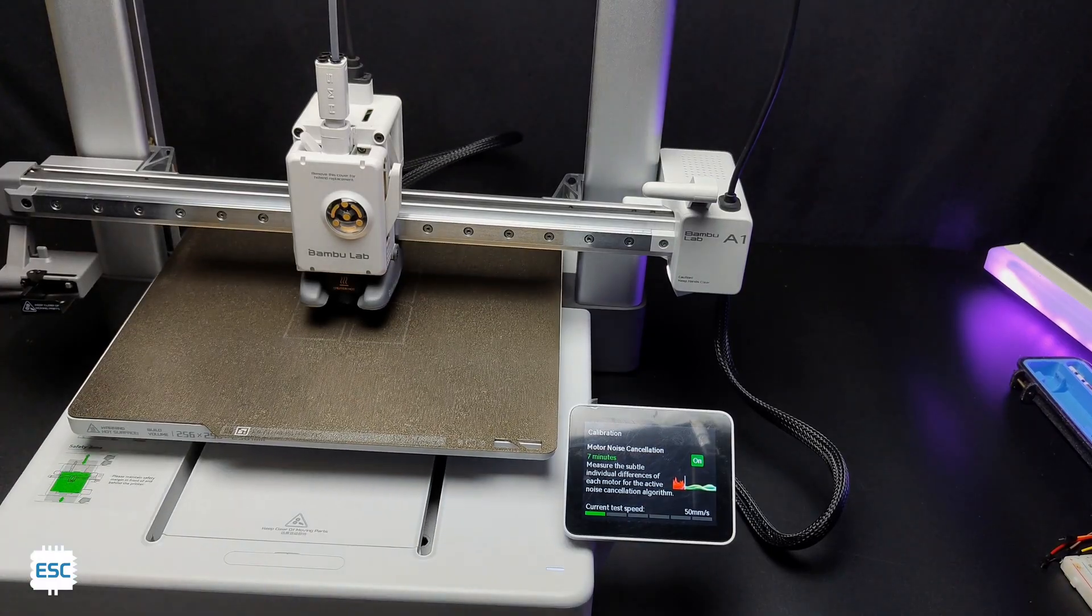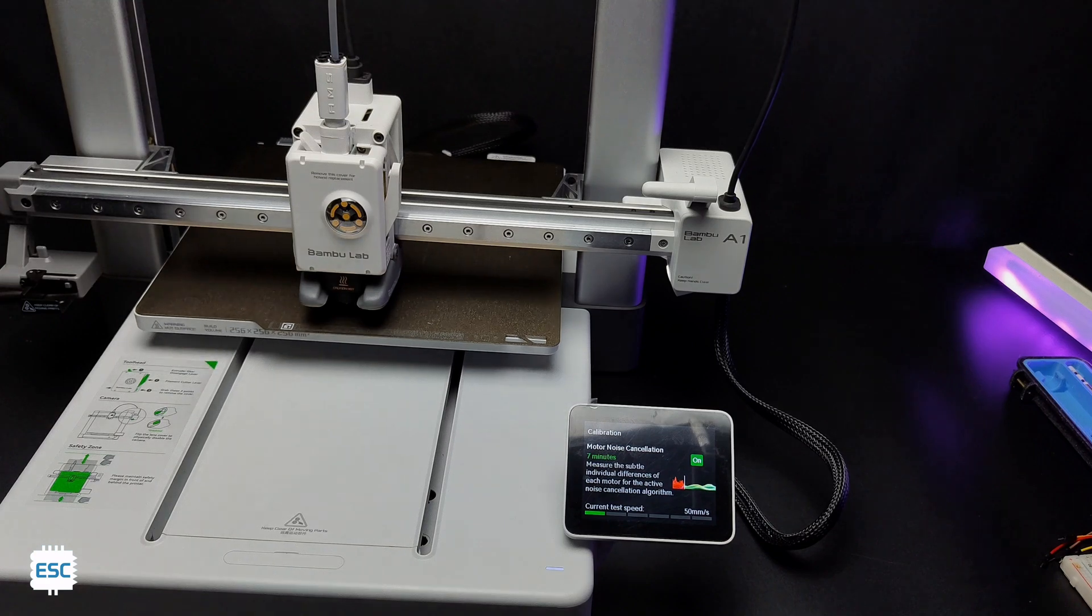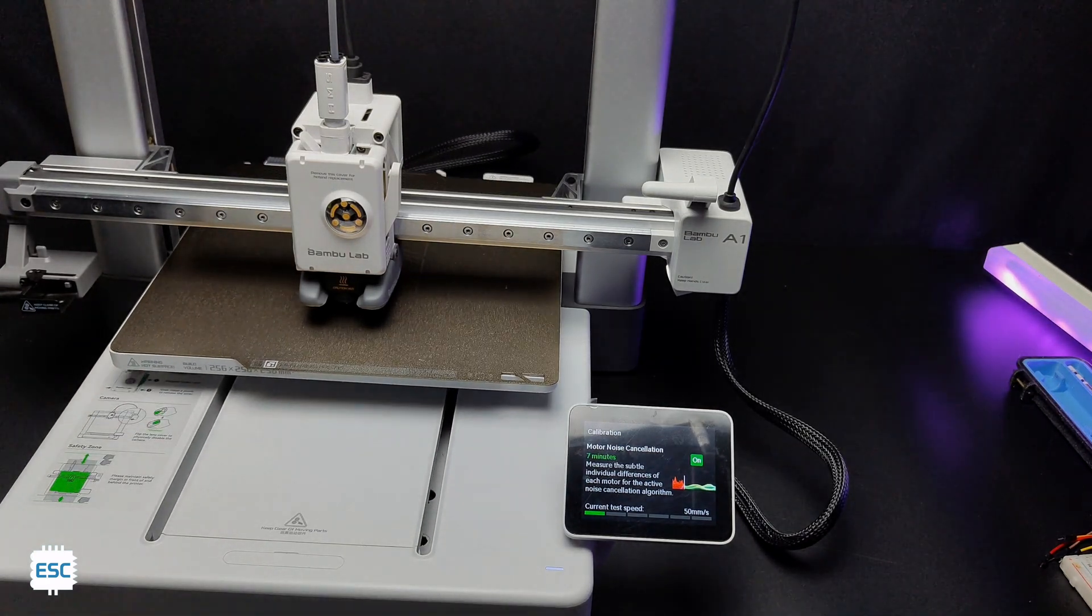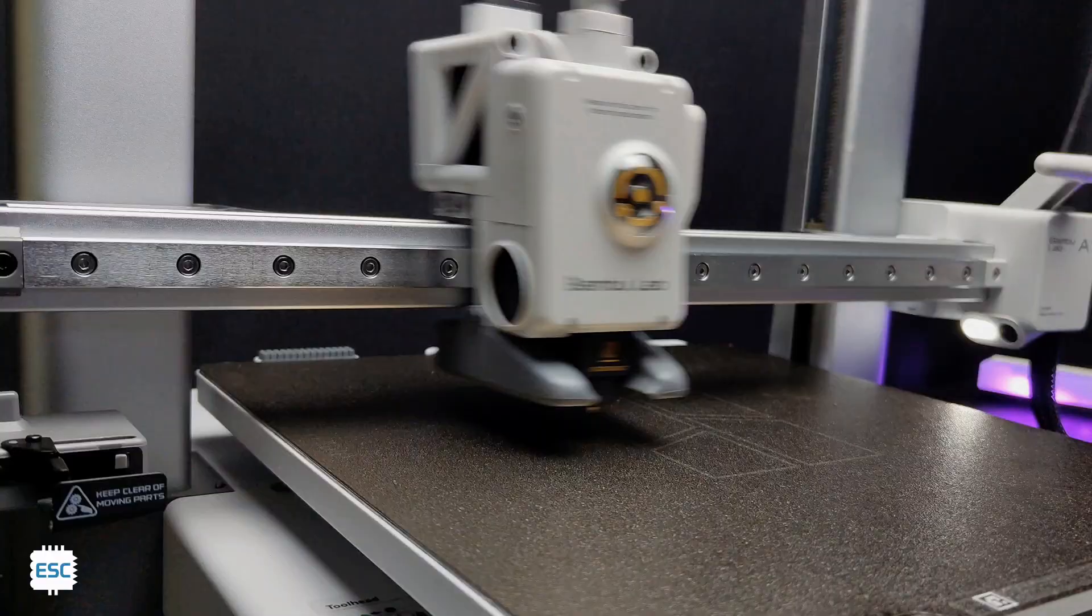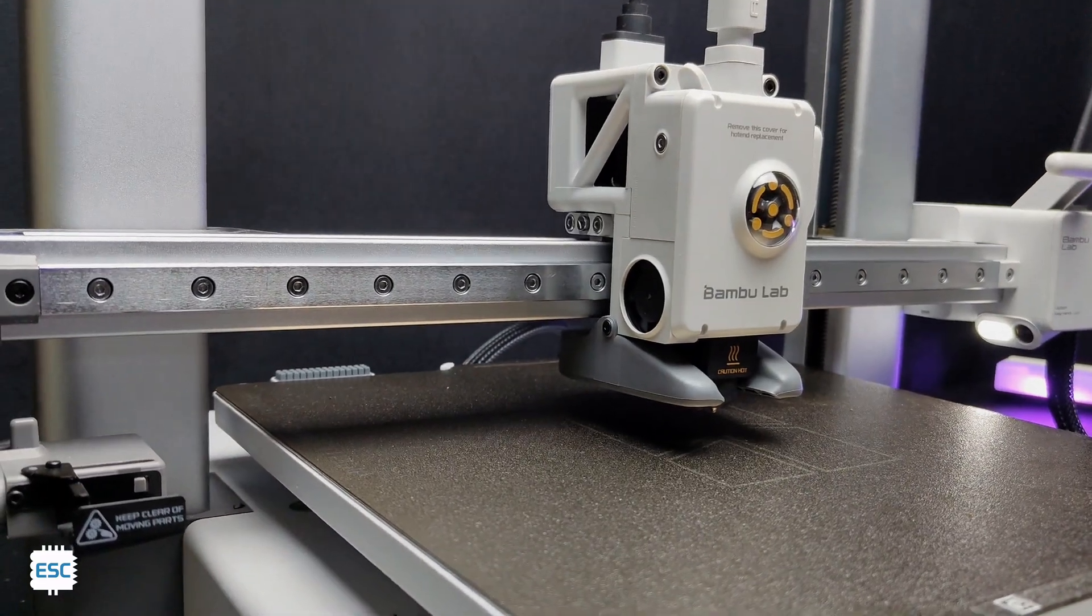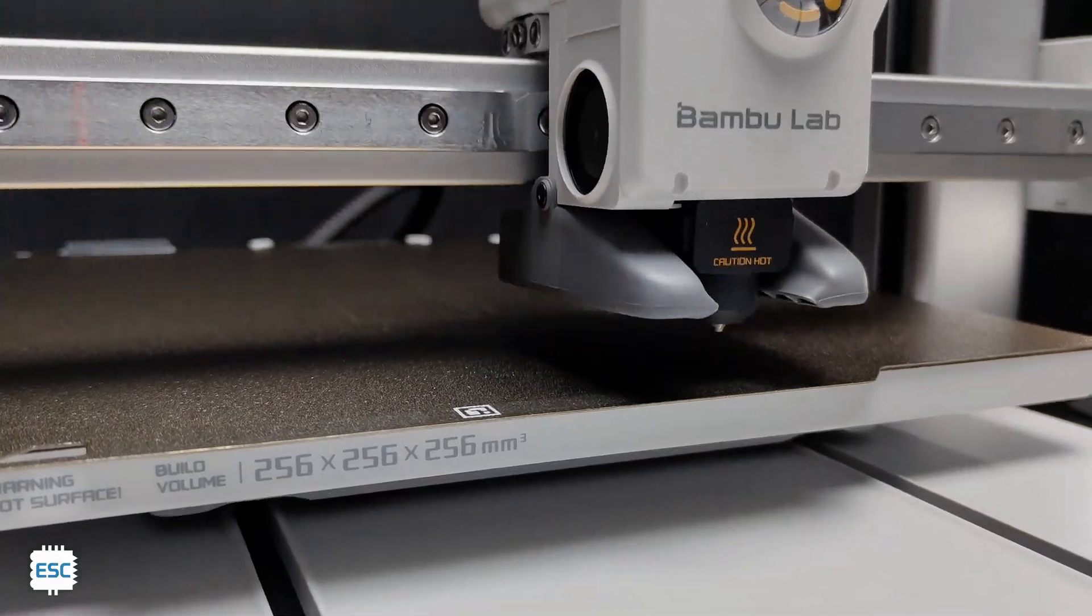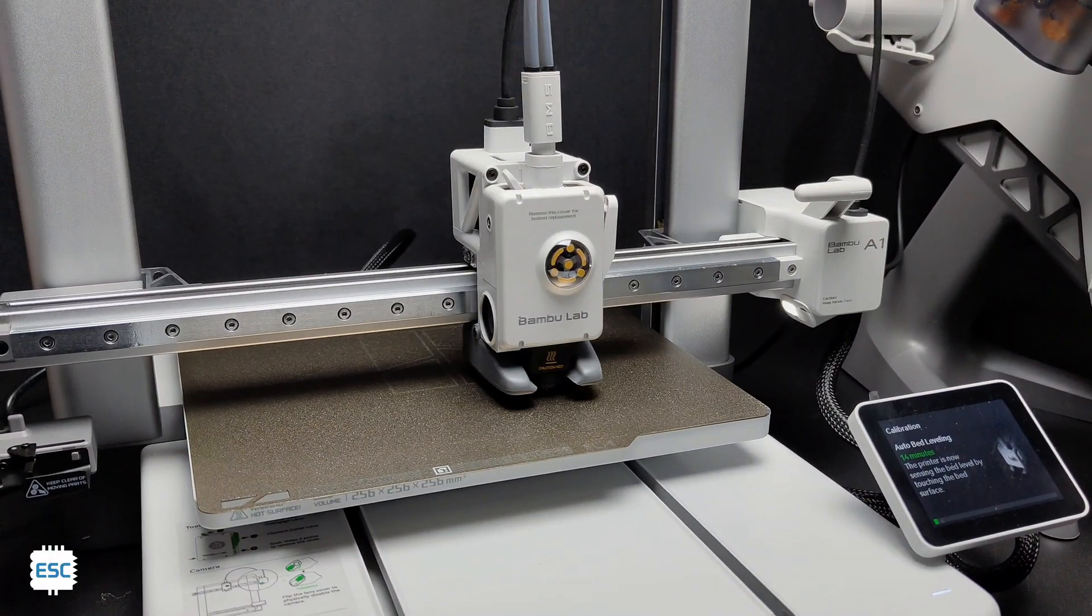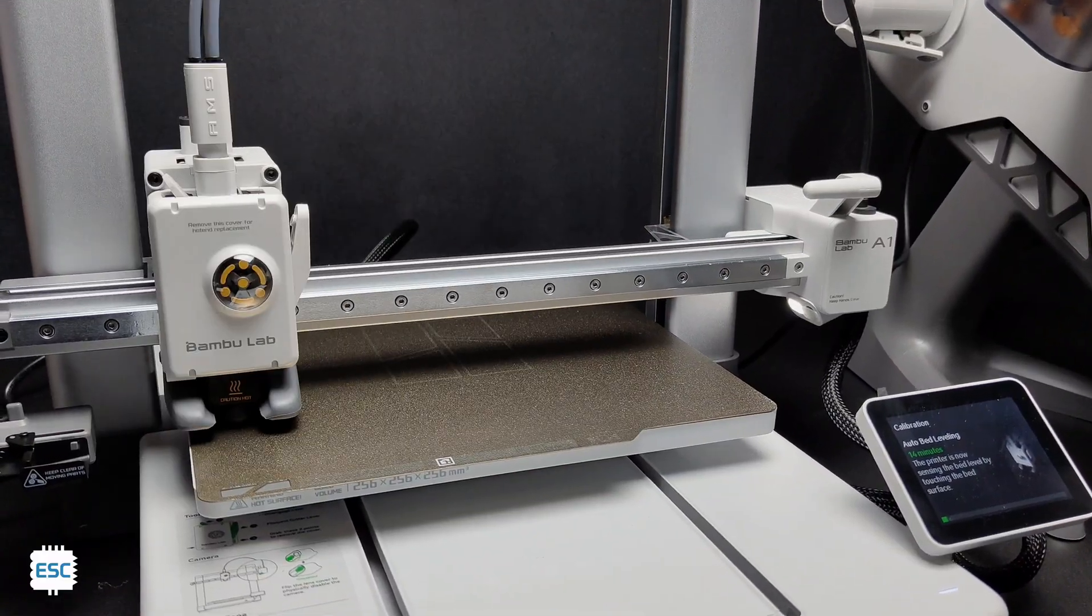After that printer starts to calibrate itself. The calibration includes motor noise level cancellation, clog warning, vibration compensation, flow dynamics etc. After the 15 minute calibration we are ready to print.